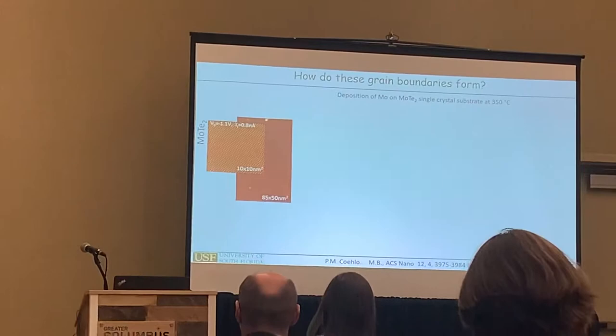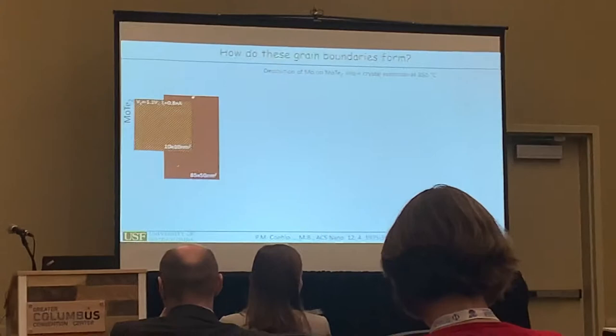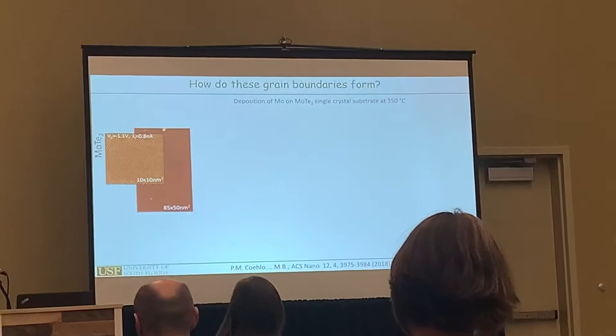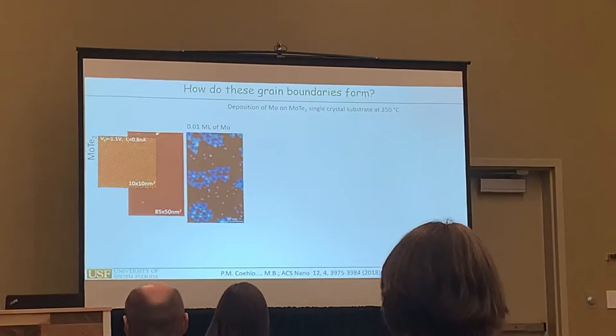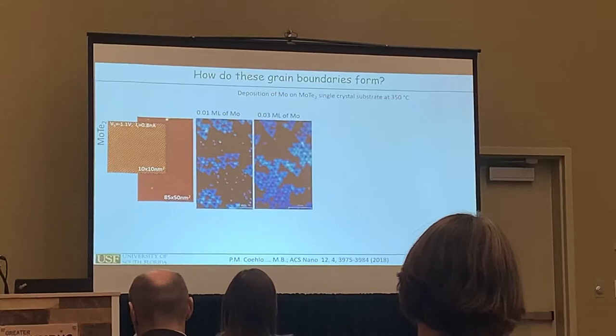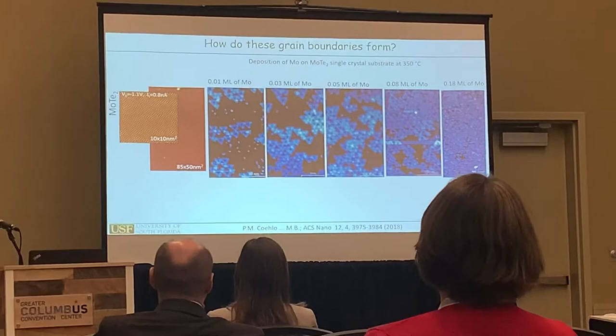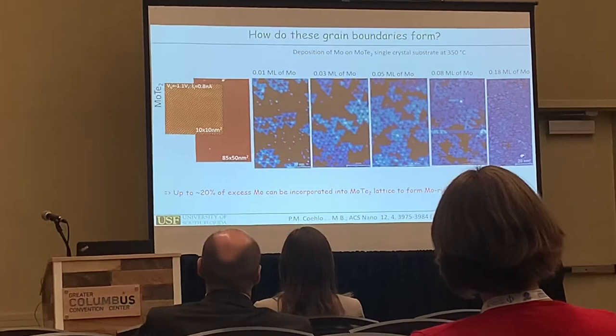To probe this, we did a very simple experiment. We took a single crystal of a transition metal dichalcogenide — in this case molybdenum diselenide — and deposited molybdenum from an in-vacuum evaporator on the surface at slightly elevated temperatures. What you see is that if you deposit just a fraction of a monolayer on the surface, you start forming these triangular loops. You can add more molybdenum to get a higher density of these grain boundary loops, and in the case of molybdenum diselenide you can incorporate something like 20% of a monolayer of excess molybdenum into the crystal structure, giving a very high density of grain boundary loops.